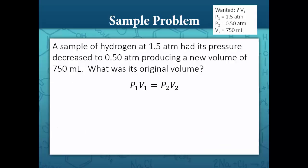Our equation is P1 V1 equals P2 V2. We want to solve for V1, so to isolate the variable we are going to divide each side by P1. The P1's on the left-hand side cancel out, and our equation becomes V1 equals P2 V2 over P1.